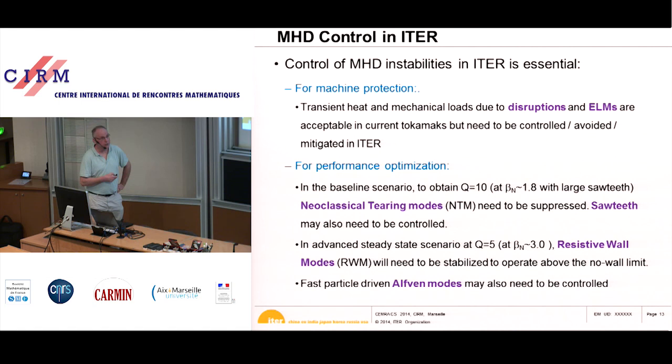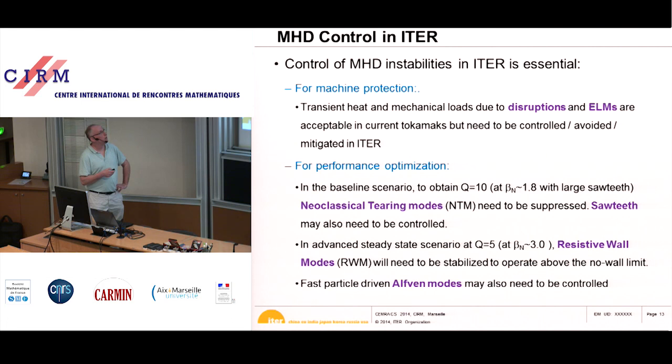Control of these instabilities is very specific to ITER. In present-day tokamaks, they try to control these instabilities, but they are not essential for machine operation. In ITER, for the first time, it will be really essential to control these MHD instabilities. If you do not, the machine will be damaged and need to be repaired.